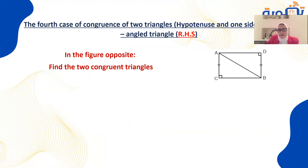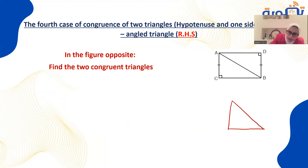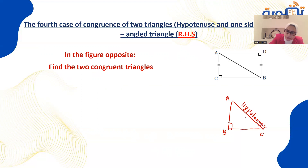The fourth case is RHS — Right angle, Hypotenuse, Side. The hypotenuse is the longest side, opposite the right angle in a right triangle. If I have right triangle ABC with the right angle at A, then BC is the hypotenuse — the side directly opposite the right angle.